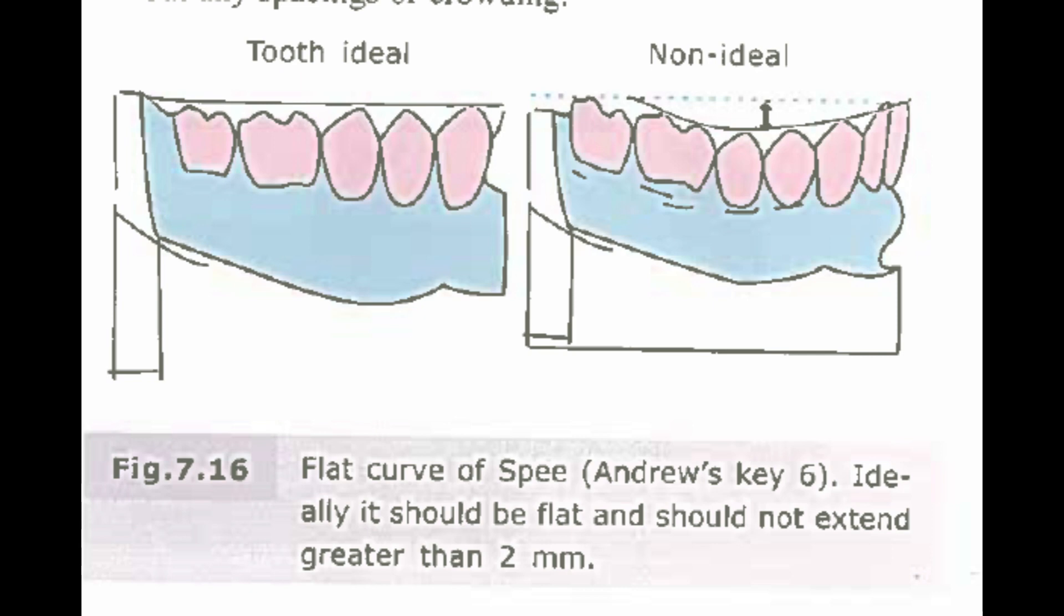Key 6 is flat curve of spee. In normal occlusion, curve of spee should be flat or should not exceed 1.5 mm.